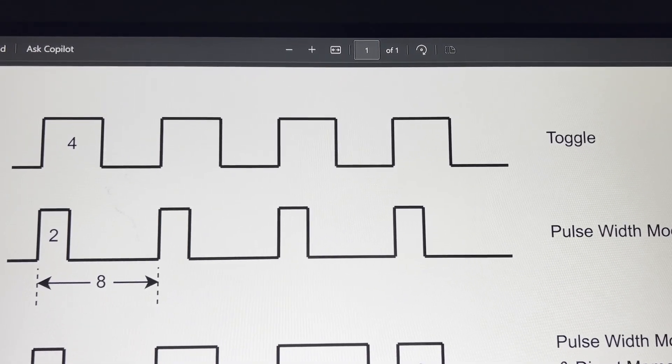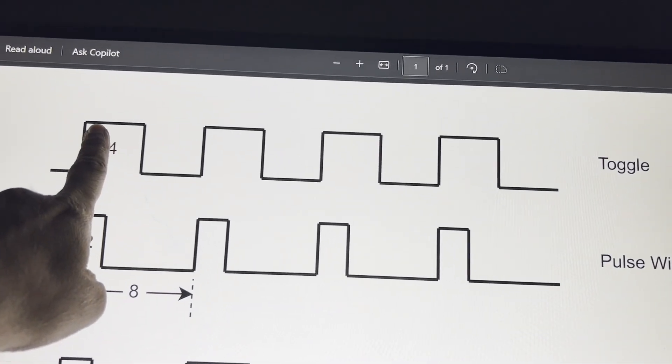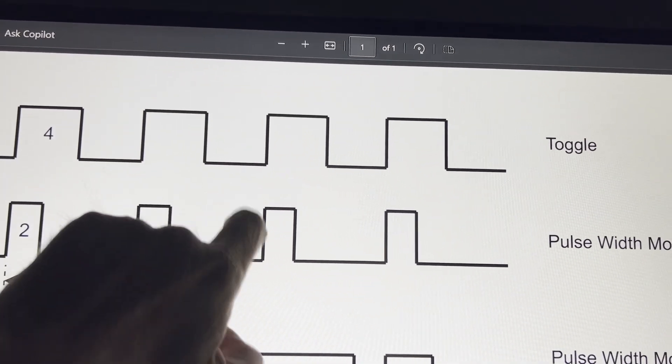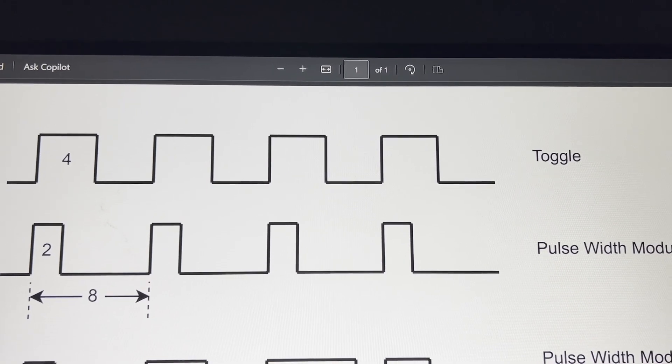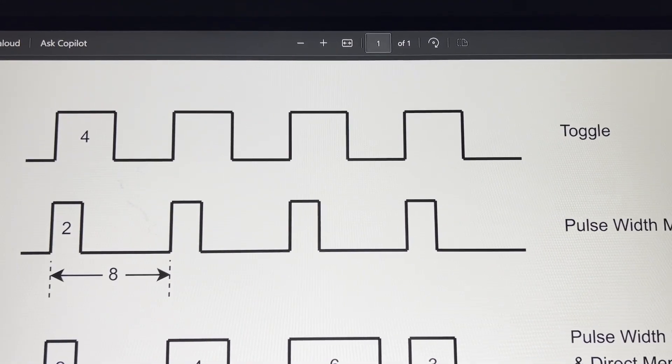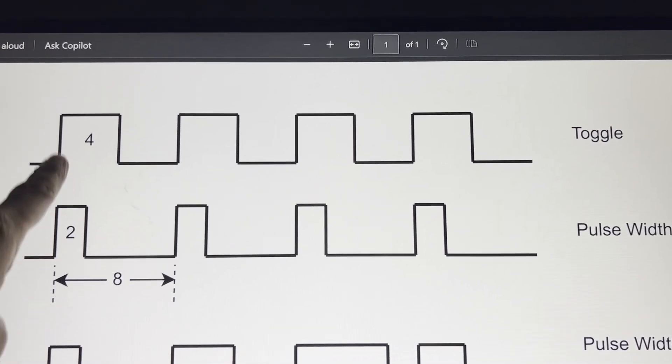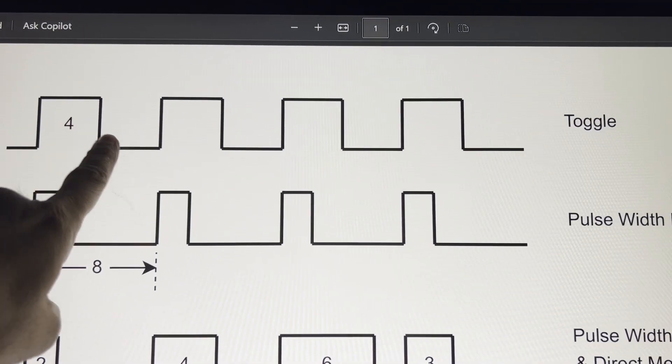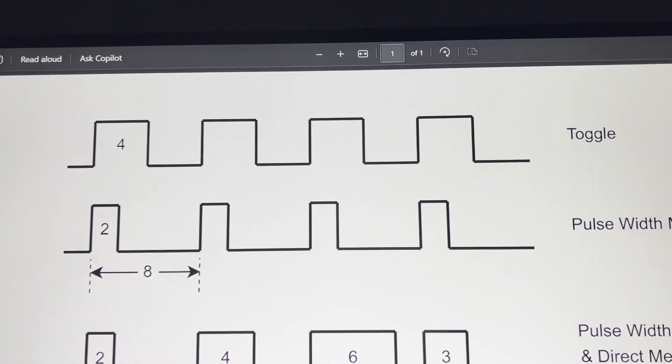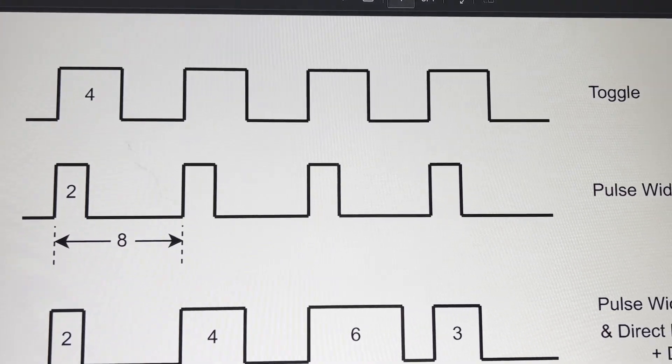The first waveform we're going to look at is called toggle, and you can see that we have a high, and then a low, and a high, and a low. With toggle, what happens is we toggle between the high state and the low state at some duration. In this case, I'm saying every four units of time, we're going to toggle. This four could be whatever number you want. I'm just choosing that as an example.